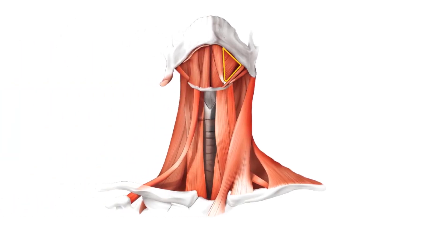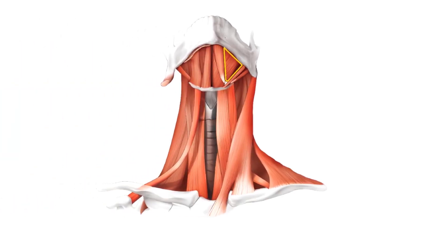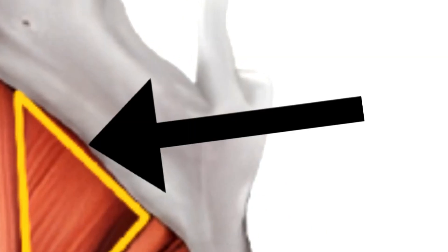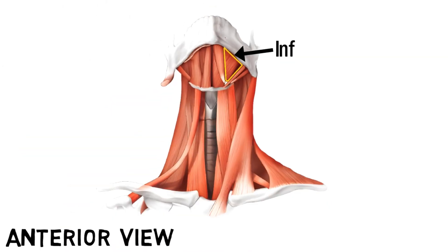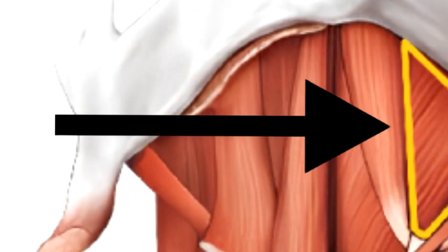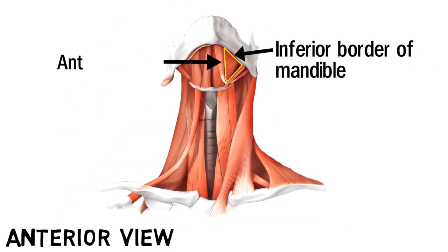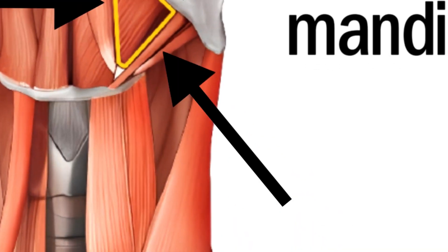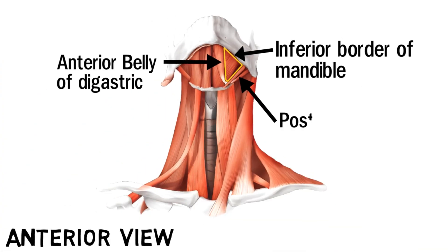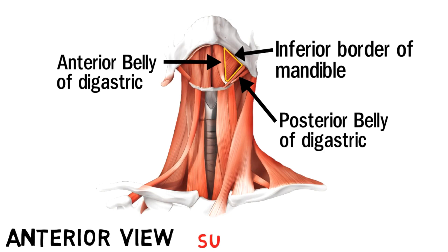Now let's have a look at this triangle. This is the anterior view of the muscles of the neck. This is the superior border, that is the inferior border of the mandible. This is the anterior border, that is the anterior belly of the digastric. And this is the posterior border of the triangle, that is the posterior belly of the digastric. So this triangle is the submandibular triangle.